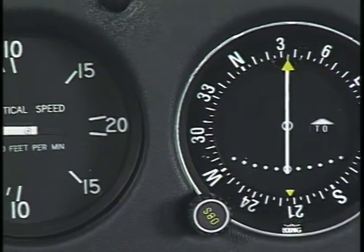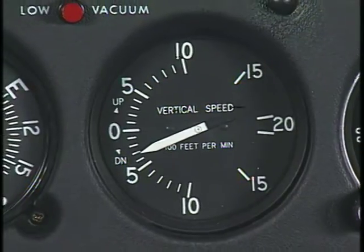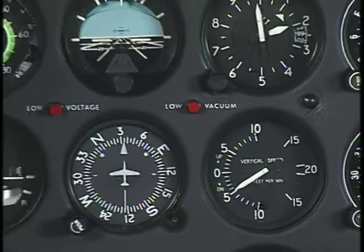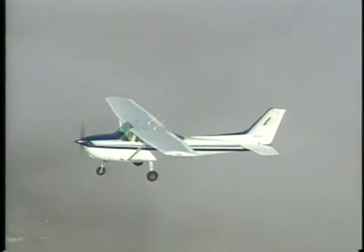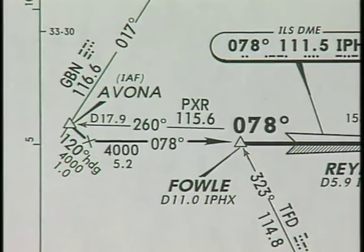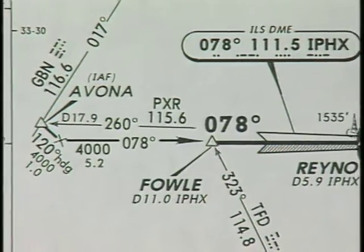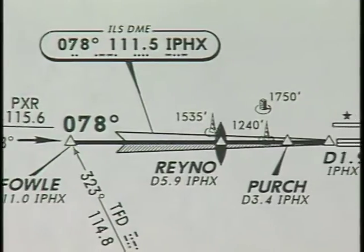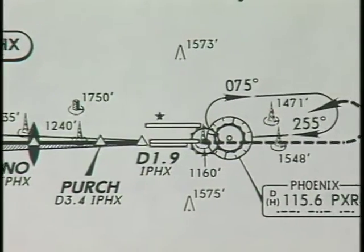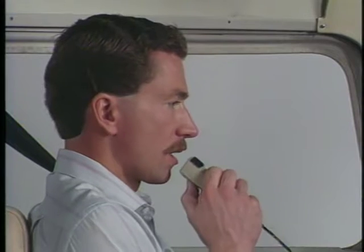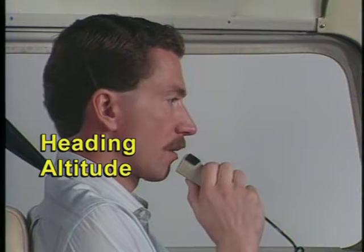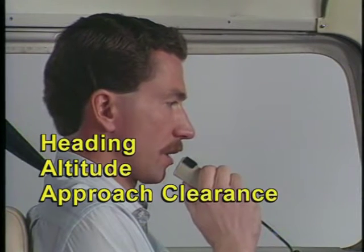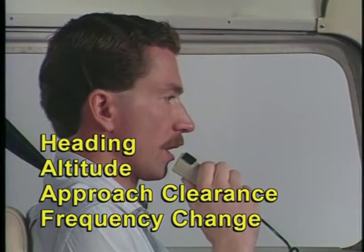In a typical example, a pilot reports leaving 12,000 for 10,000 and is instructed to report Arlen. Upon reporting Arlen, the controller issues a left turn to heading 055, instructs the pilot to maintain 5,000 until established on the localizer, clears the aircraft for the ILS runway 7 left approach, and advises to contact Phoenix Tower at Raynaud on 120.9. This clearance includes four key elements: the assigned heading, the assigned altitude, a clearance for the approach, and instructions for when to change frequencies.